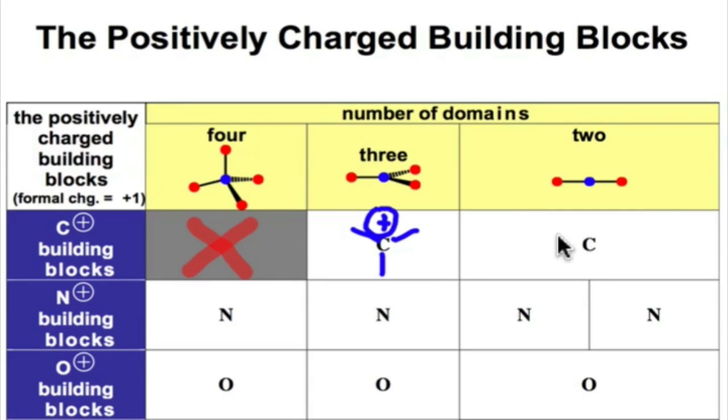It's also possible to have 2 electron pair domains for a carbocation. And that's going to have a double bond domain and a single bond domain. So those are the carbocation building blocks.